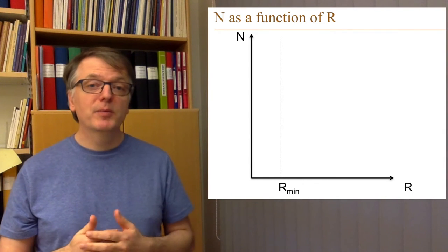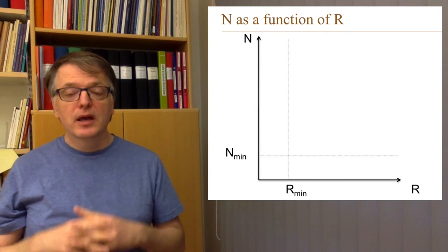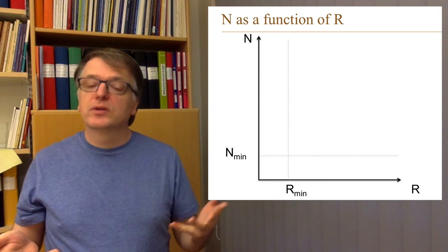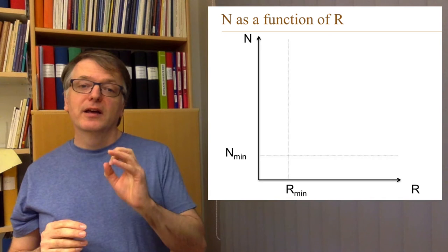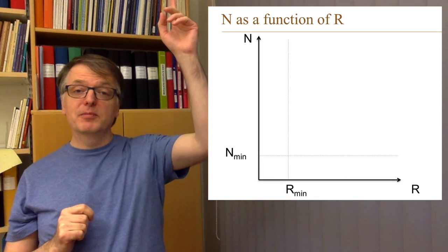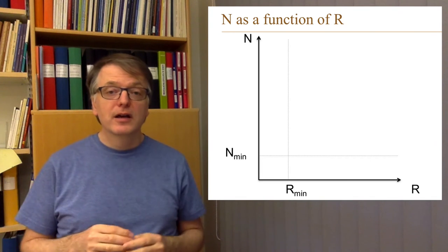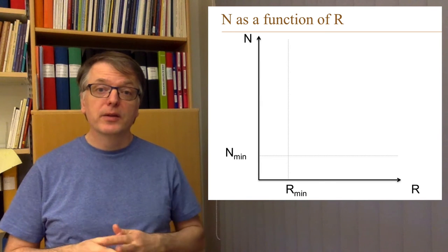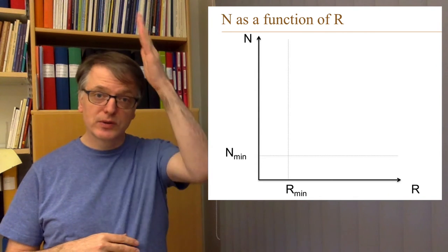We also know we have a minimum number of equilibrium stages, giving a horizontal line. Those two lines are asymptotes for the function we want to draw. For reflux ratios close to the minimum, we get infinitely many equilibrium stages needed. For an infinite reflux ratio, we get the minimum number of equilibrium stages. So the function will look something like a hyperbolic curve between these two asymptotes.